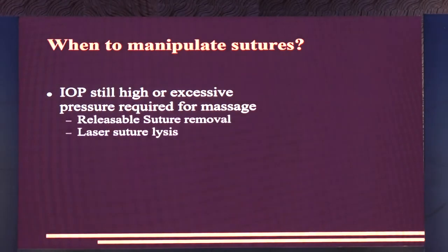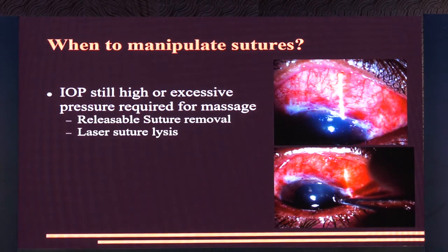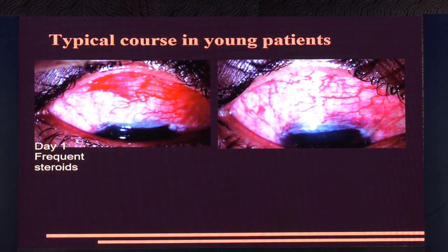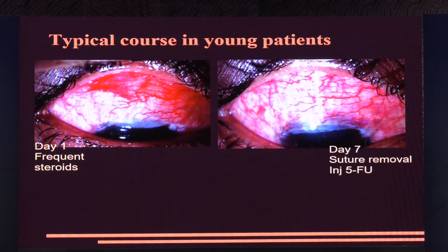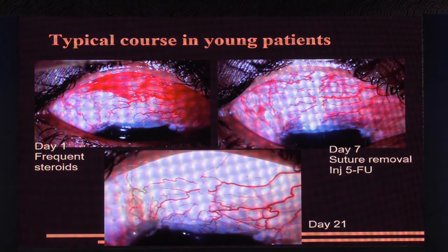If IOP is still high, releasable suture removal or laser suture lysis can be done — best within the first week, but not later than three weeks even with MMC. The typical course in a young patient: day one, frequent steroids; by day seven, suture removal and 5-FU; and by day 21, all going well, you should have a bleb on its way to remodel and get to nearly normal conjunctiva.